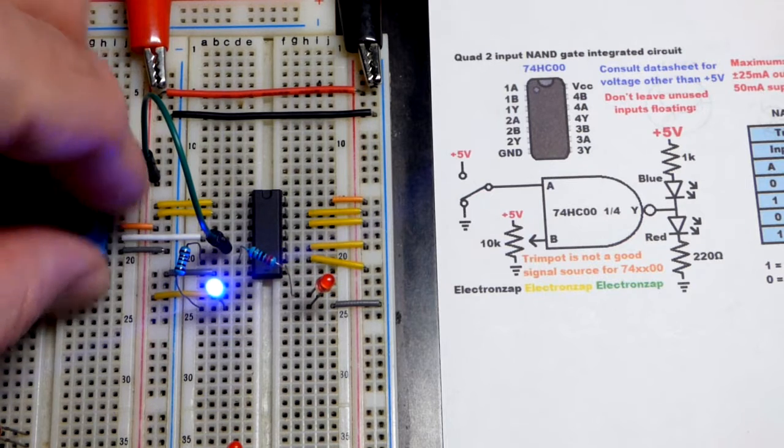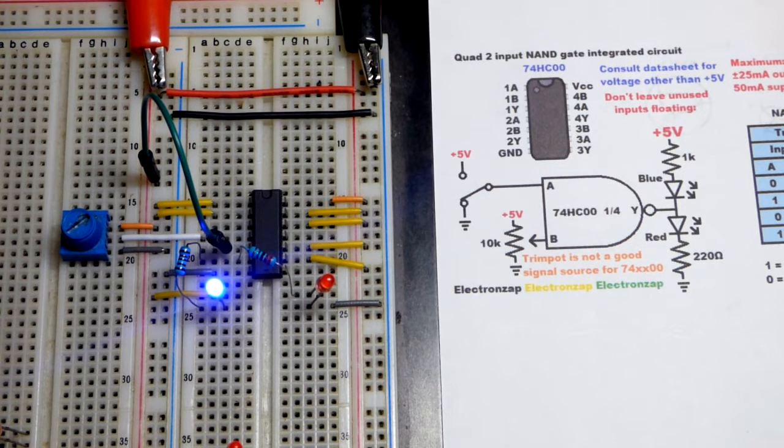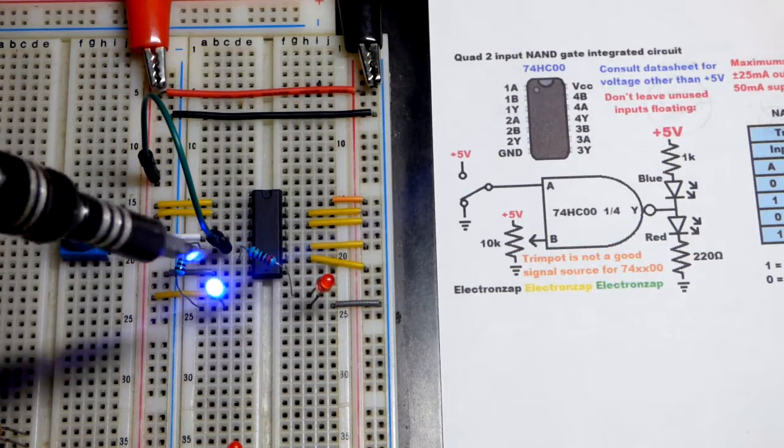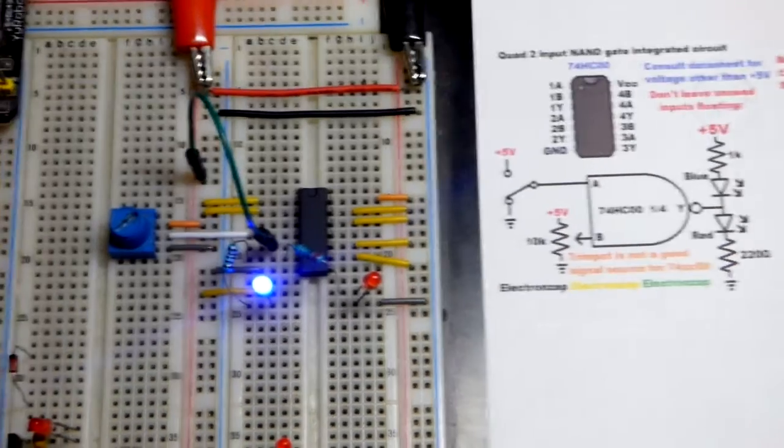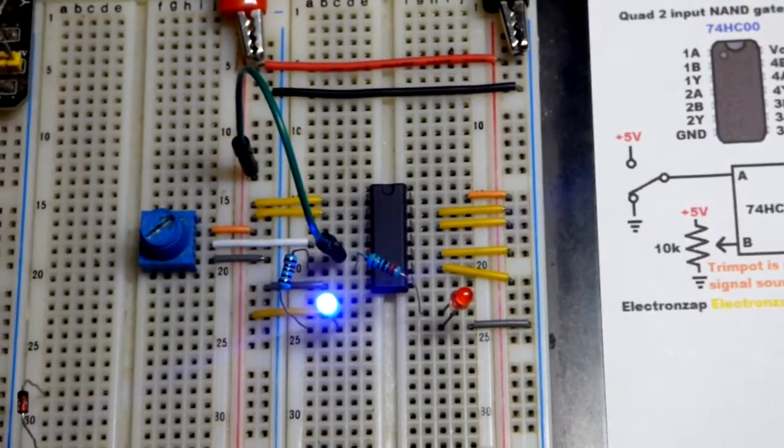If I turn the trim pot most of the way to the positive supply, now we have two high inputs. That's the only time the output goes low. We'll zoom in a little bit.